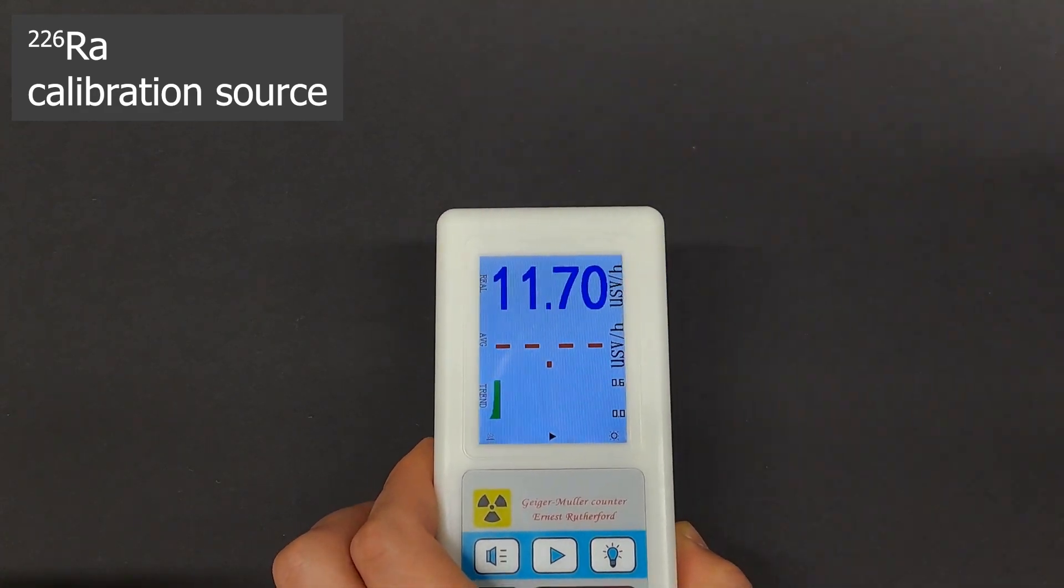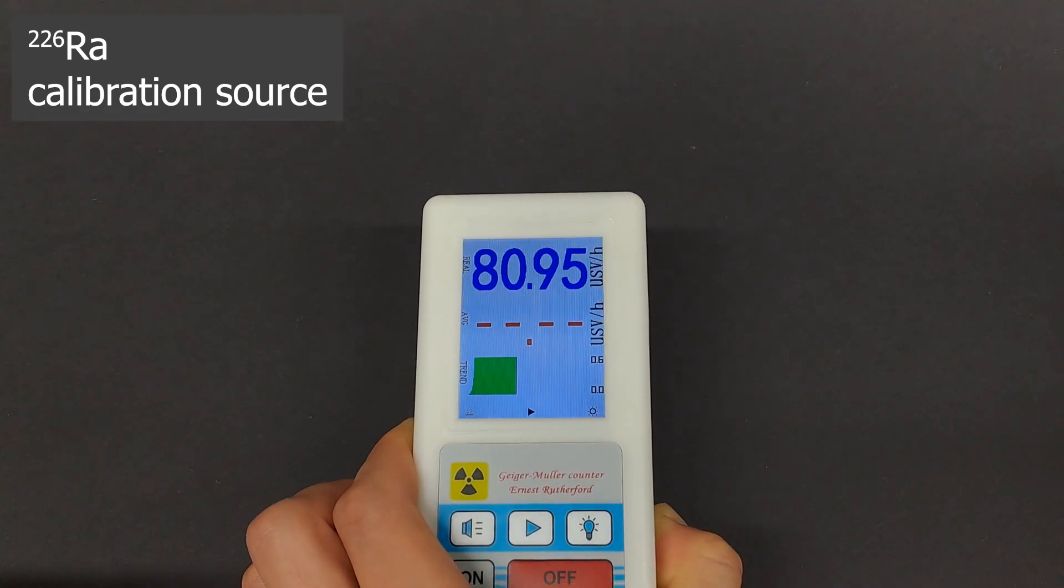For Radium-226, it measures a whopping 94.56 microsieverts an hour.